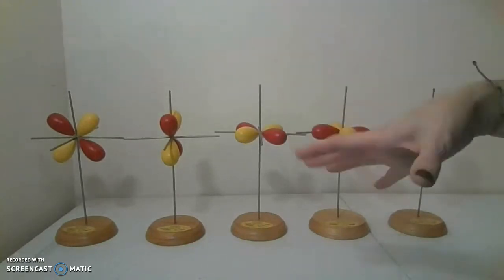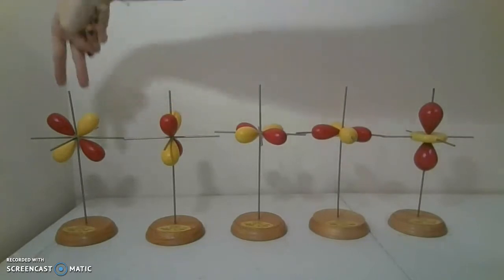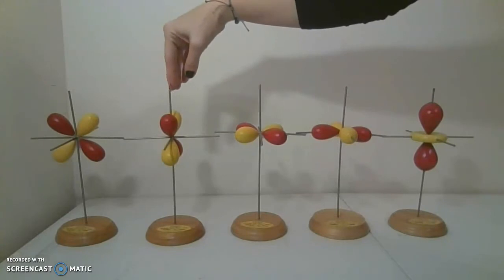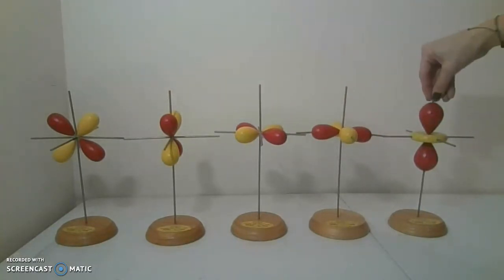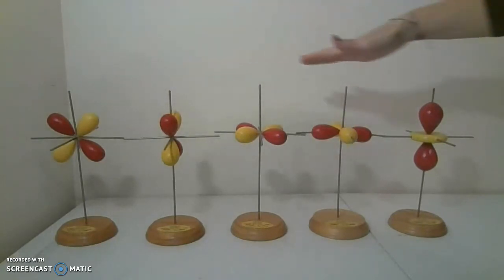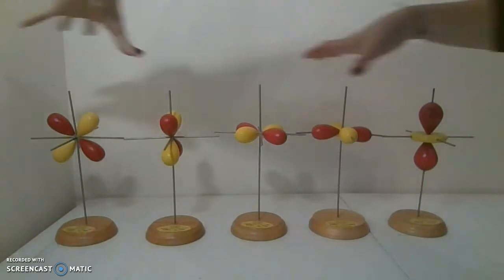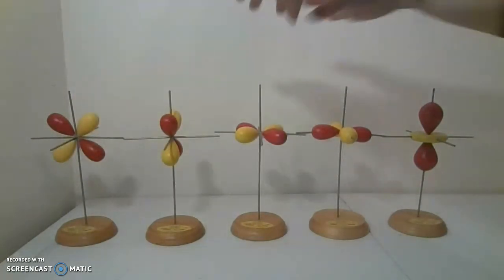All you need to know is that two electrons fit in this one and can be anywhere where there is a lobe. Two fit here, two fit here, two fit here, and two fit here. So that gives us a total of 10, which is going to be one layer of our d-orbitals.